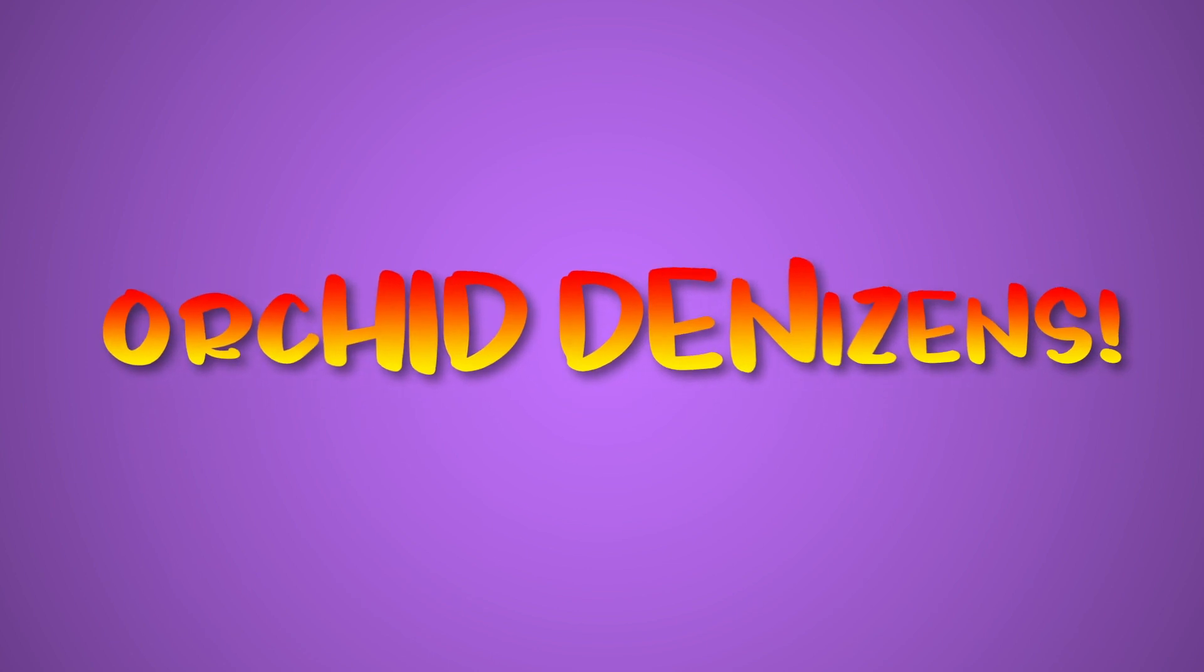In this video we're going to look at two different kinds of cryptic clue, later on reversals, but first up, hiddens, which work like this.